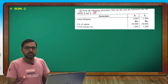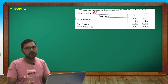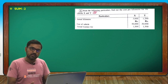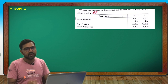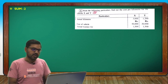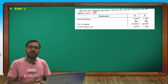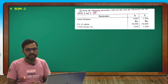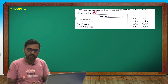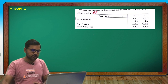The question asks: from the following particulars, find out the cost per kilometer for vehicles X and Y. The service provider has two vehicles — vehicle X and vehicle Y — and we need to find the per kilometer cost for both.